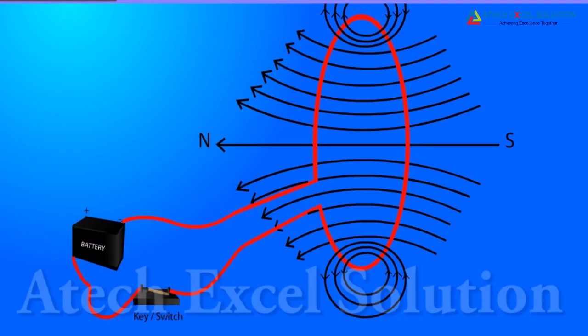At every point of current carrying circular loop, the concentric circles representing magnetic field around it would become larger and larger as we move away from wire. By the time we reach the center, the arcs appear as straight lines.